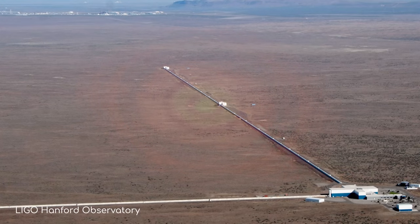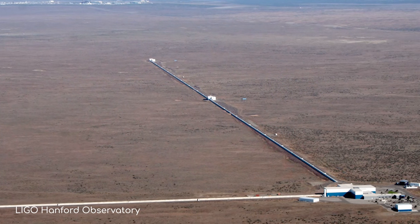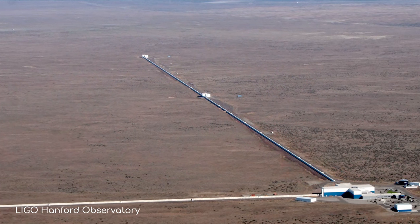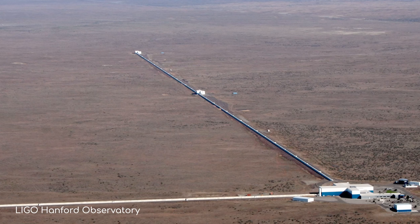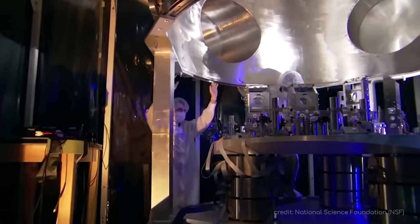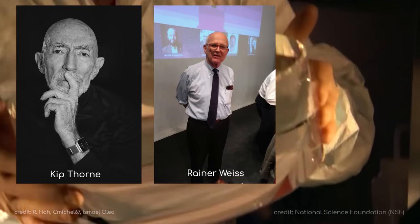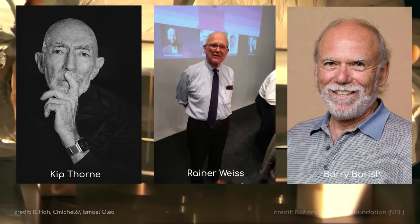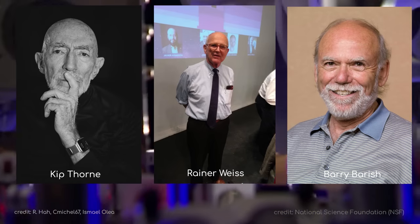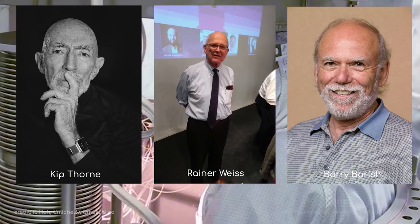This is where LIGO comes in. It consists of two observatories funded by the United States National Science Foundation and operated by MIT and Caltech. Among its driving forces are renowned physicists Kip Thorne, Rainer Weiss, and Barry Barish, all of whom share the 2017 Nobel Prize for their decisive contributions to the detection of gravitational waves.